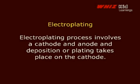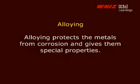Electroplating process involves a cathode and anode, and deposition or plating takes place on the cathode. Alloying protects the metals from corrosion and gives them special properties.